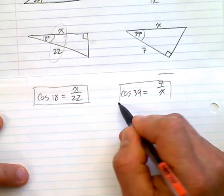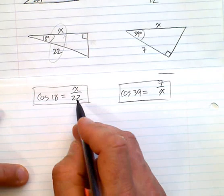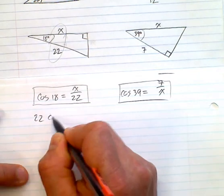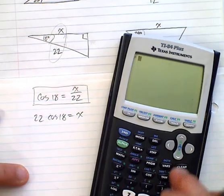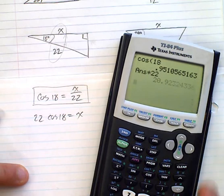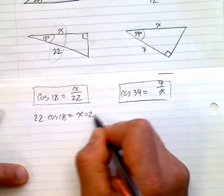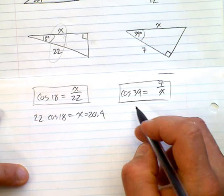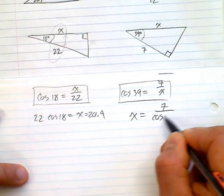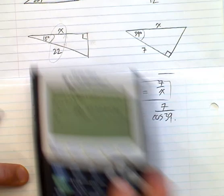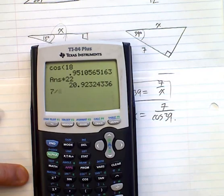All right, there's our statements. And now in this case, variable on the top, so it's 22 times cos 18 is equal to x. So I like doing my coses first, cos 18, boom, times 22, I get 20.9. In this case here, I have the x on the bottom. Let's rearrange it so that I can solve it. Cos 39, boom, there you go. And now it's going to be 7 divided by cos 39, and we have an answer of 9.